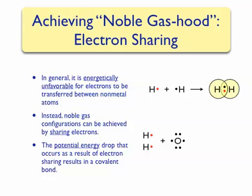A slightly more complicated example is our favorite molecule, water. We know that the chemical formula for water is H₂O, but now we can describe why this is. Hydrogen has one valence electron, while oxygen, in group 6A, has six valence electrons and is two electrons away from a noble gas configuration.